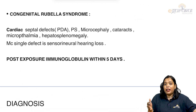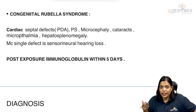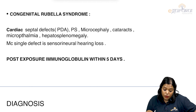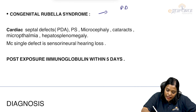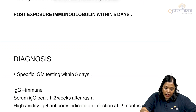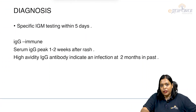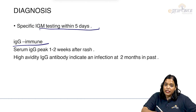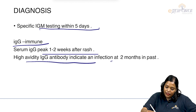Rubella mainly causes congenital rubella syndrome. Features include patent ductus arteriosus, pulmonary stenosis, microcephaly, cataract, microphthalmia, and hepatosplenomegaly. The most common single defect is sensorineural hearing loss. The classical triad of rubella is patent ductus arteriosus, cataract, and sensorineural hearing loss. Post-exposure, immunoglobulin should be given within 5 days. IgM positive within 5 days indicates active infection; IgG indicates immunity. High avidity IgG indicates an infection 2 months in the past.